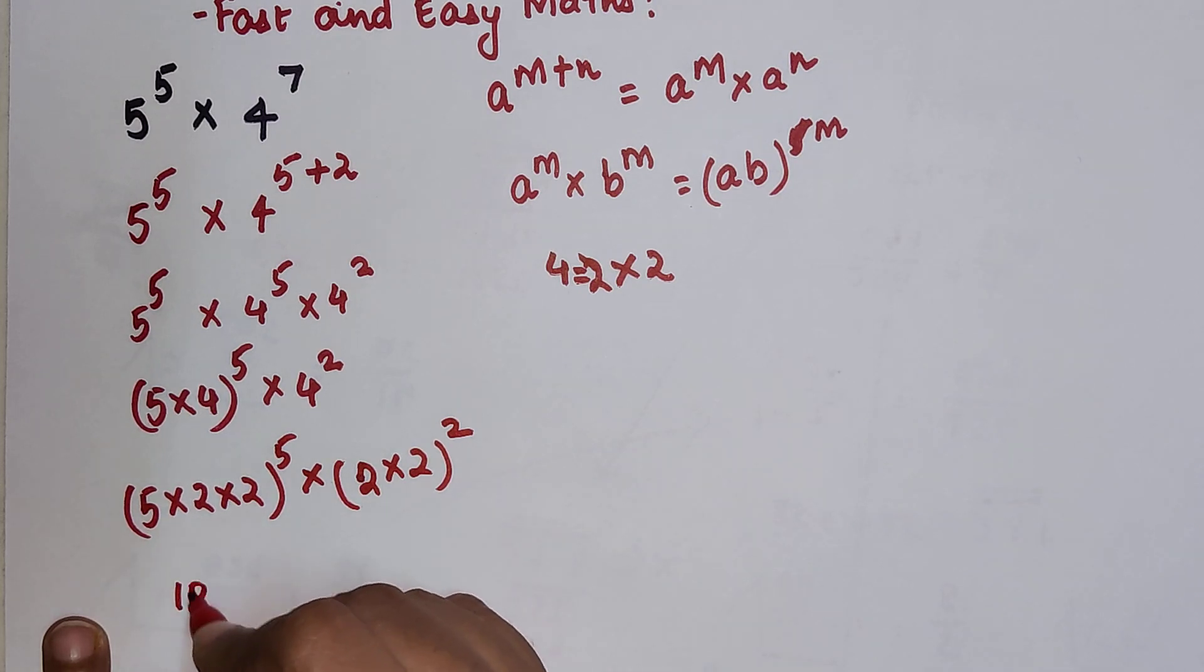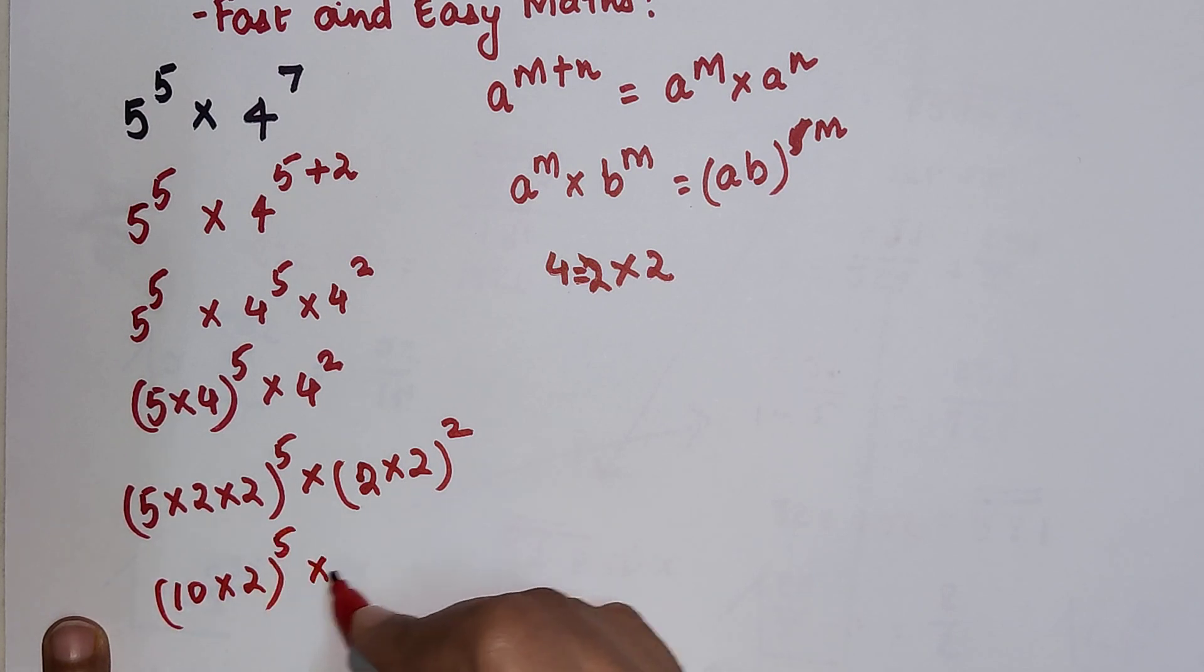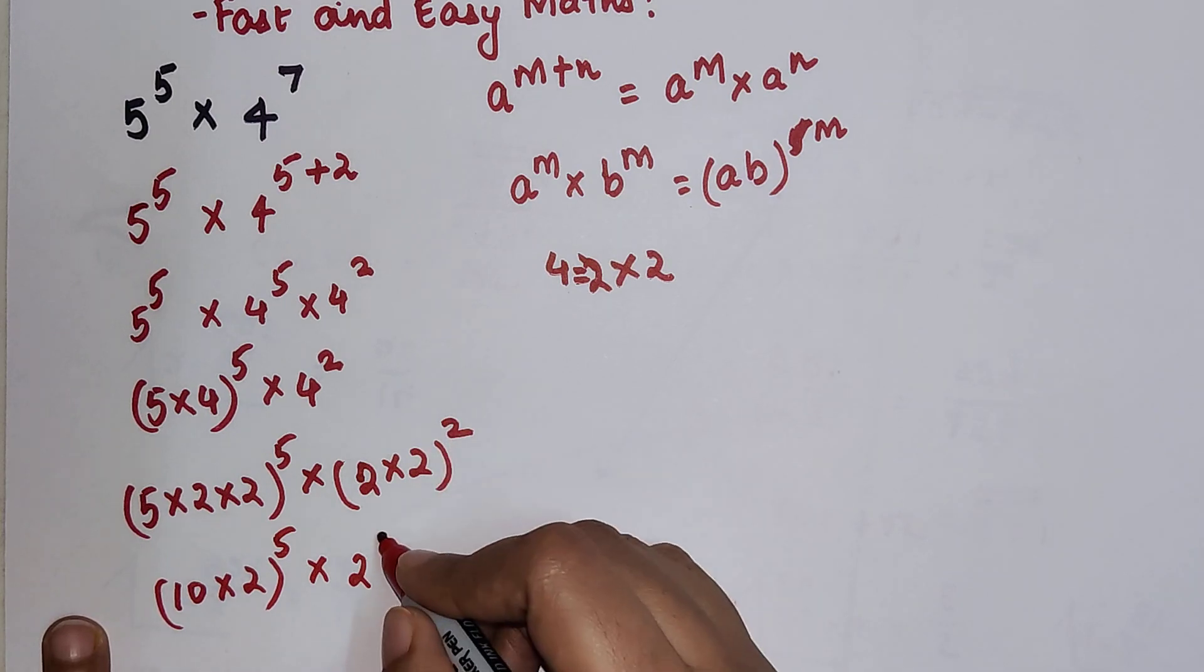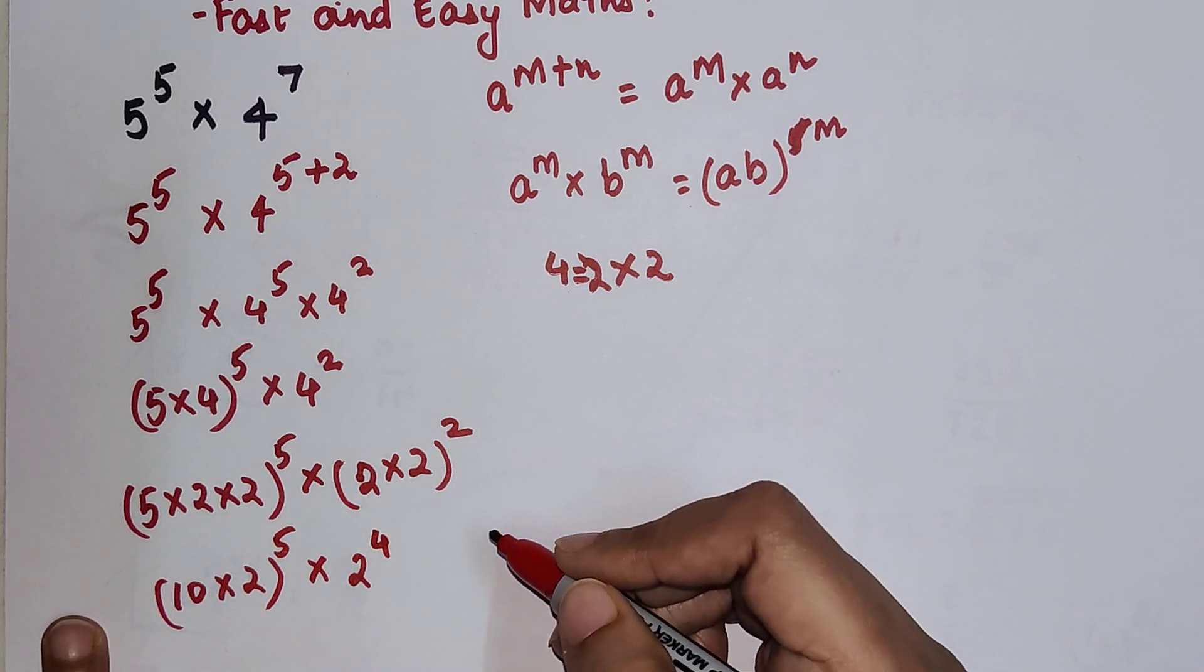So here let's do this. 5 into 2 is 10 into 2 the whole raise to 5 into 2. So this is 2 square, which can be written as 2 raise to 4.